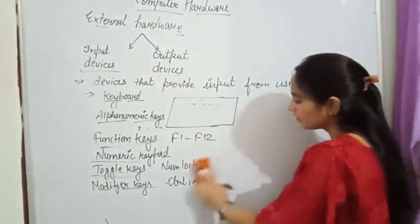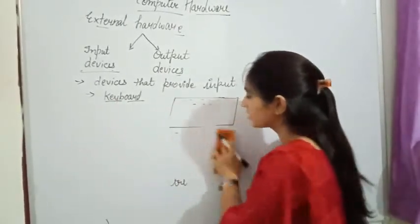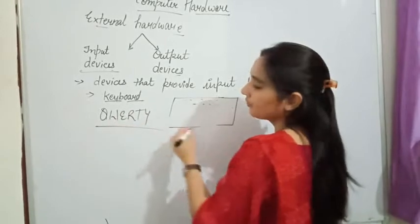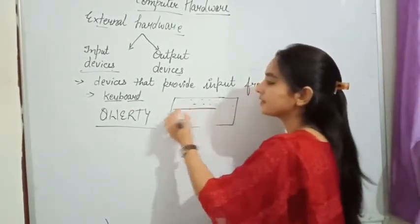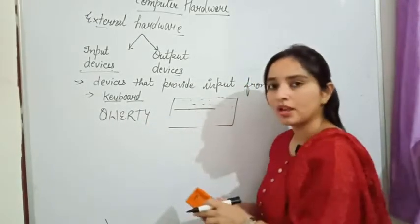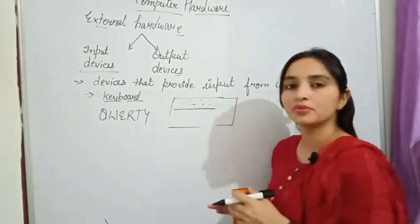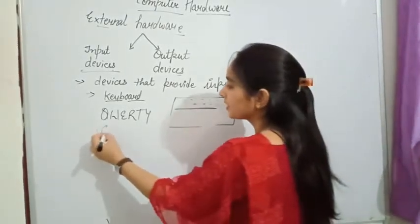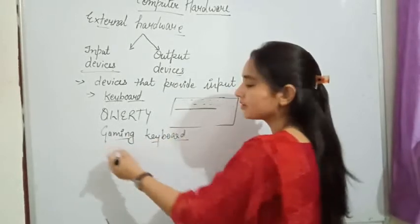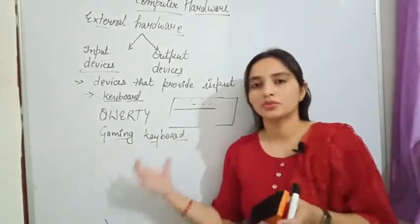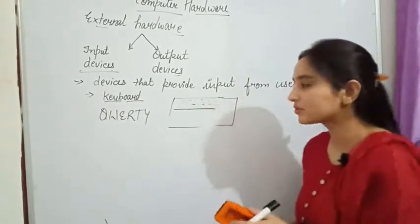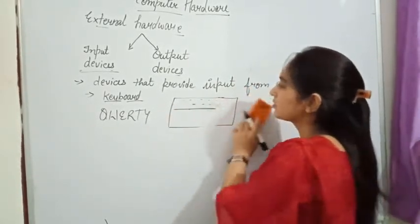Next, we have various keyboard types. The most common standard type is the QWERTY keyboard — named so because the letter series starts with Q-W-E-R-T-Y. We also have various keyboards for specific purposes, like gaming keyboards that have special keys for volume control, resolution control, and speed. Similarly, we have wired and wireless keyboards; wireless keyboards work based on laser lights.